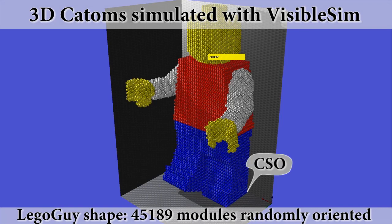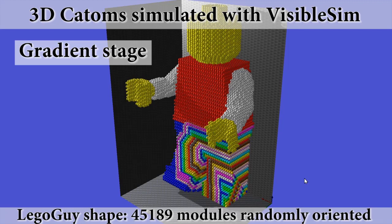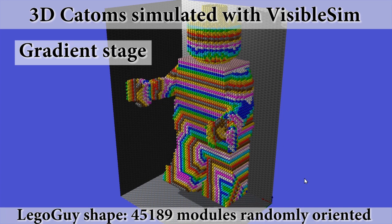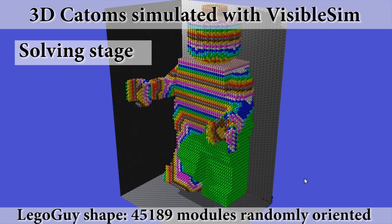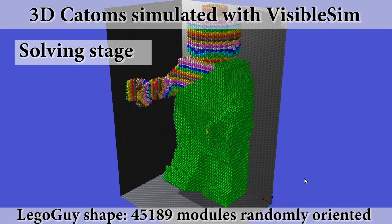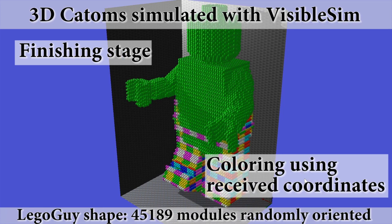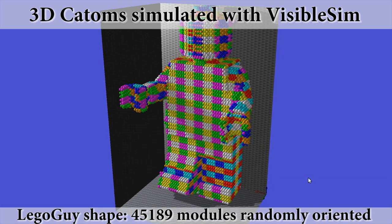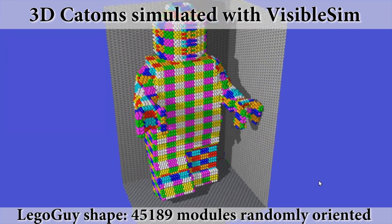It's time to show some results. First, a simulation in VisibleSim of the running of our algorithm on a large set of 44,000 3D catomes describing a dense model of a Lego guy. All the modules are colored in green, indicating that they are well placed and oriented. The 3D grid at the end shows that the received coordinates are all correct.